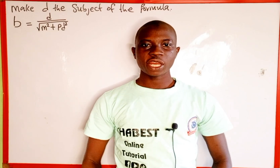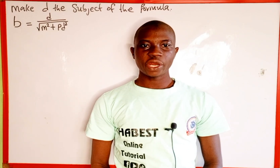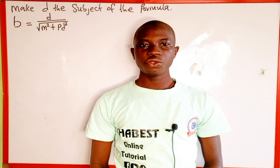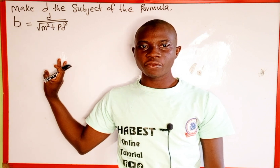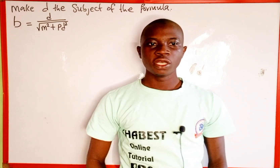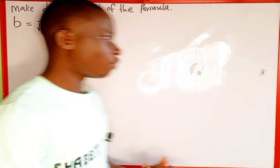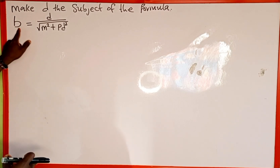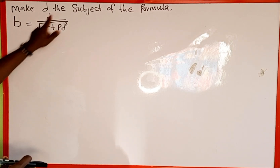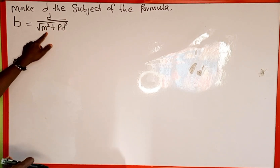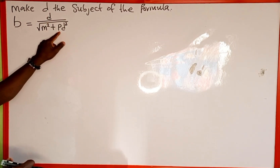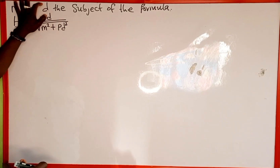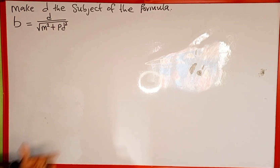Hello everyone, welcome back to Shabez online tutorial. In today's tutorial we're going to learn how to make d the subject of the formula. This is change of subject of formula and the given equation is b equals d over root of m squared plus pd squared, and we're asked to make d the subject of the formula.